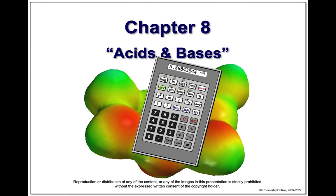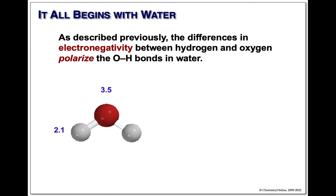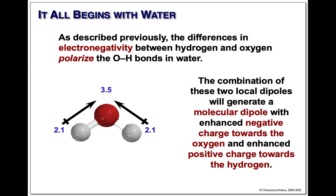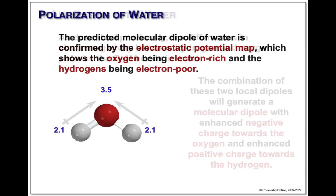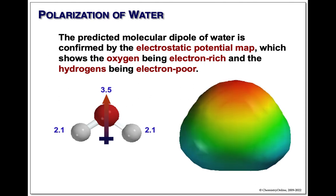Back in Chapter 7, we talked about water and electronegativity. We said that because oxygen was more electronegative than hydrogen, the OH bonds in water were going to be polarized — positive on the hydrogen end and negative up by the oxygen. This gives us a molecular diagram where one end is positive and one end is negative, which we showed using an electrostatic potential map. Blue represents the absence of electrons; red represents the excess.